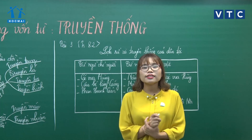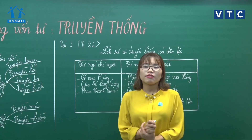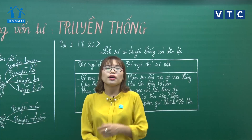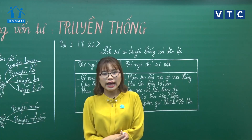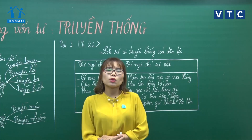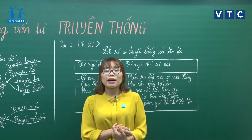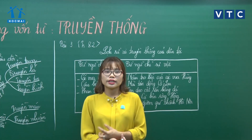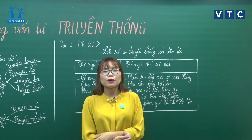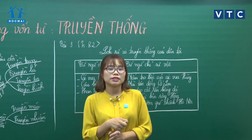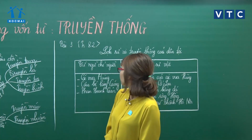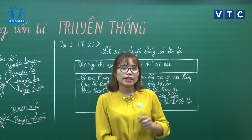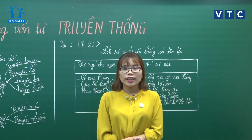Mỗi một bạn về nhà hãy tự chọn một truyền thống nào đó và tự xây dựng cái bảng như thế này. Có thể là truyền thống yêu nước, truyền thống về các vị anh hùng dân tộc, truyền thống tôn sư trọng đạo - đó cũng là truyền thống thể hiện vẻ đẹp uống nước nhớ nguồn, thể hiện lòng biết ơn của chúng ta đối với những người đi trước. Mỗi bạn gửi cho cô và cô sẽ chia sẻ với lớp để tất cả các con mở rộng thêm vốn từ về truyền thống.